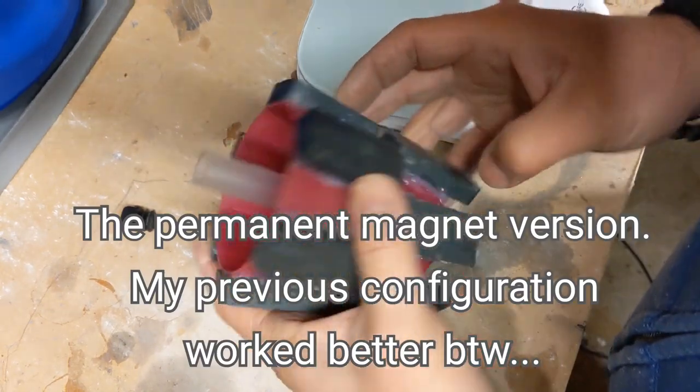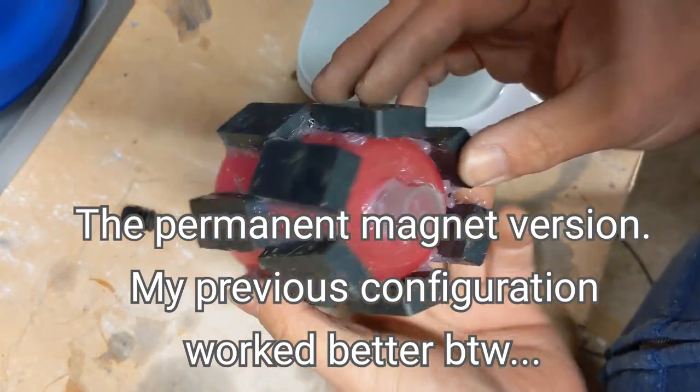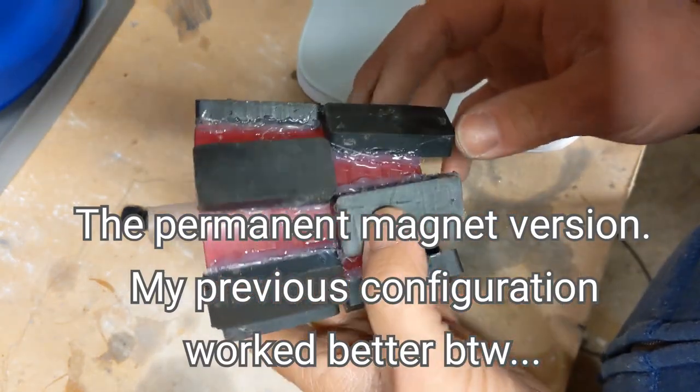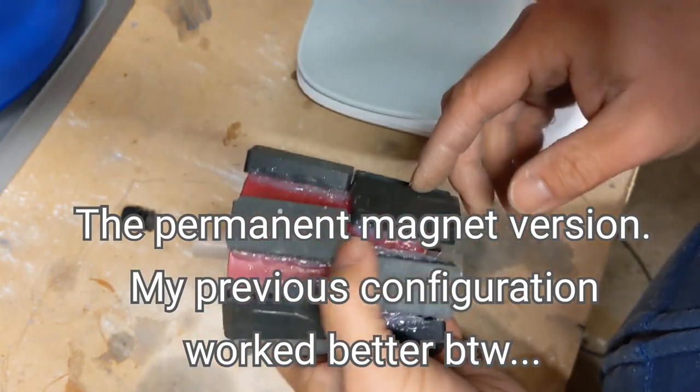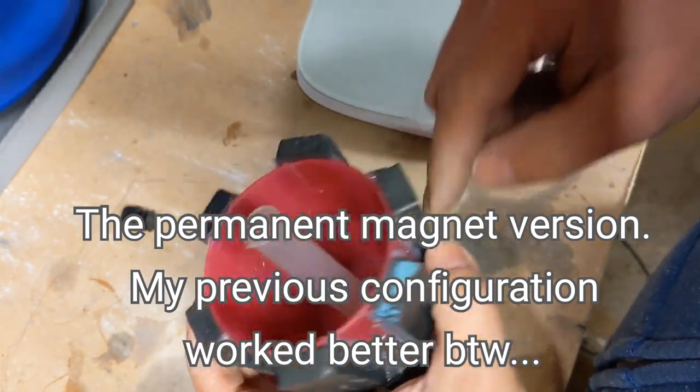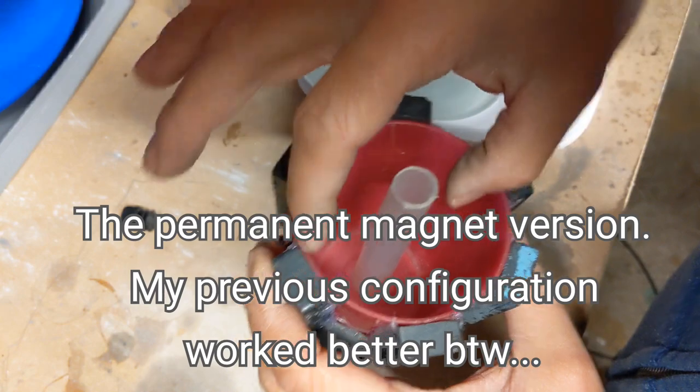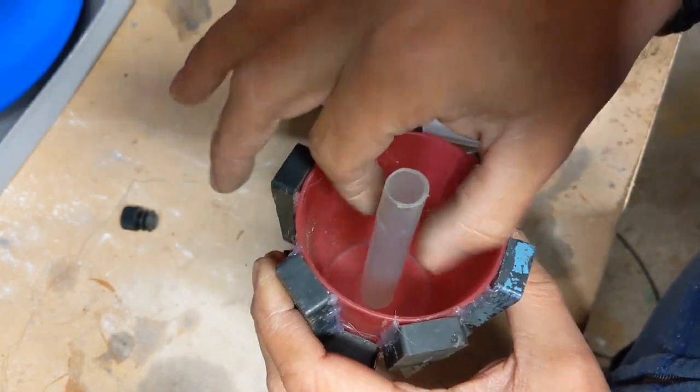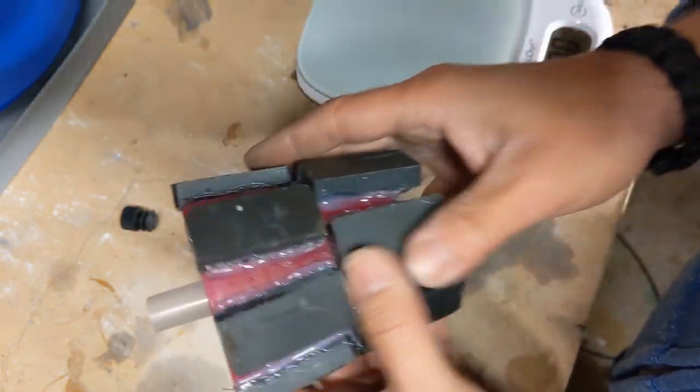I just remade this launcher, which I made a previous version before. So these are all poles in repulsion here, pushing against each other throughout this whole assembly.